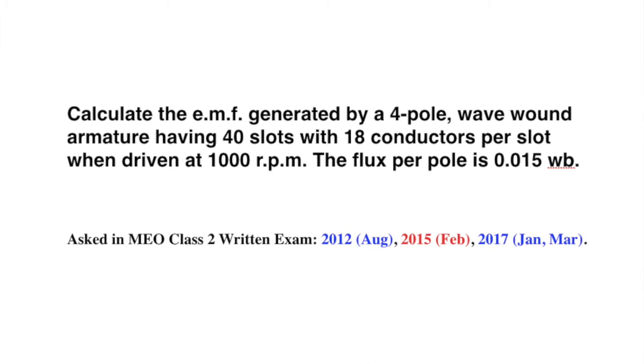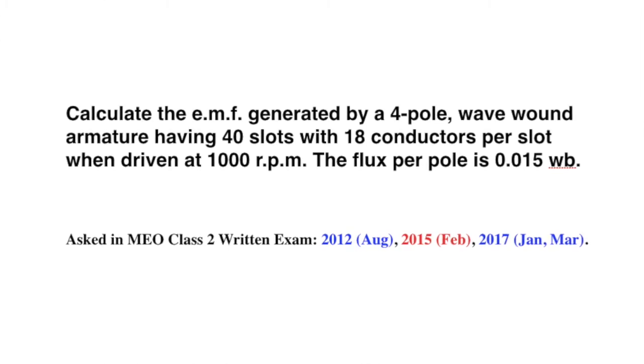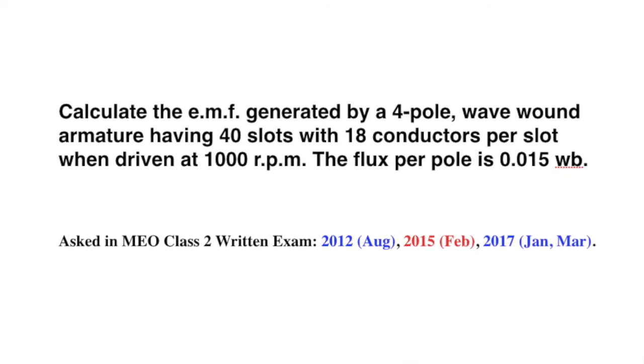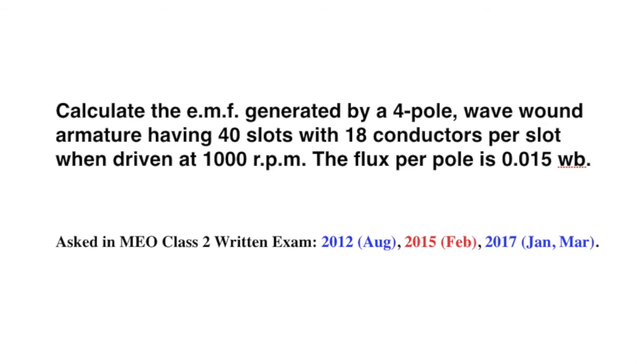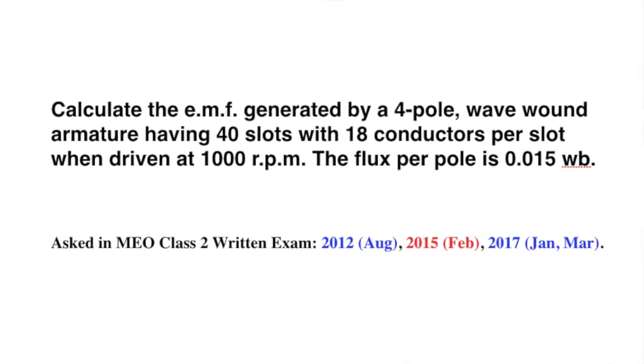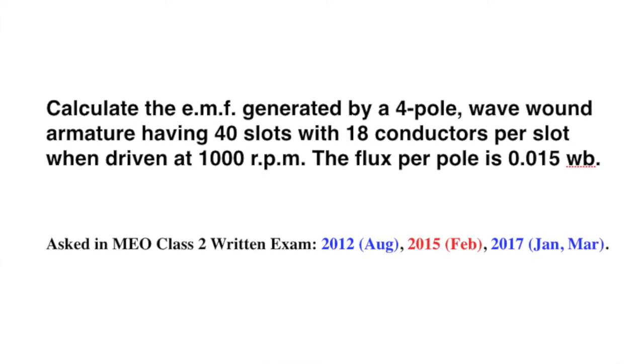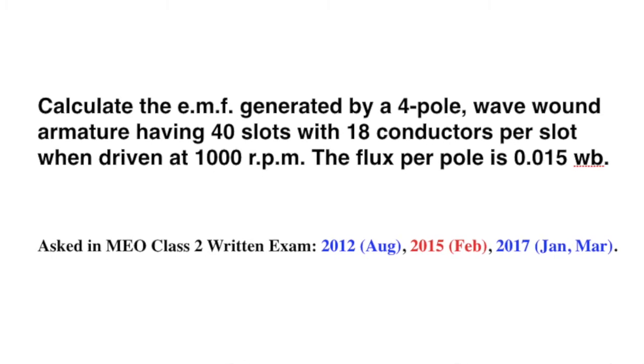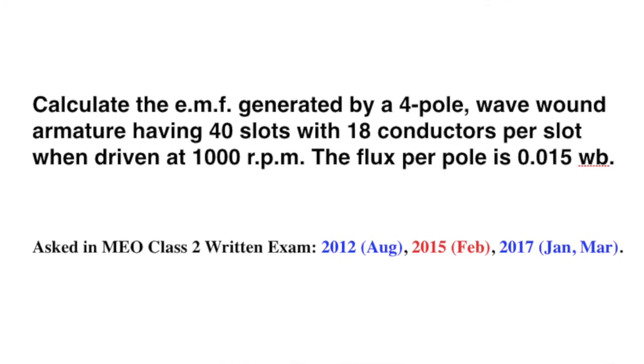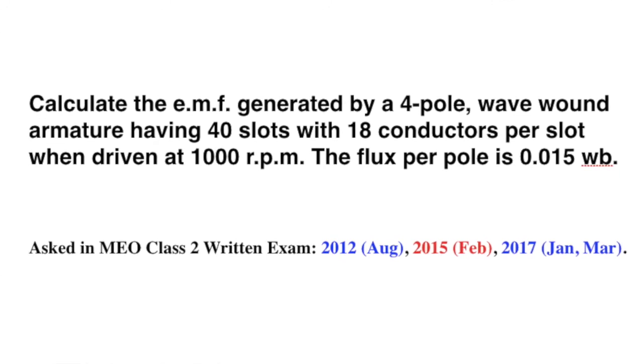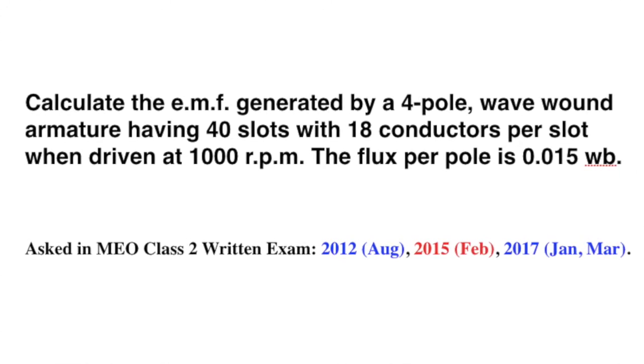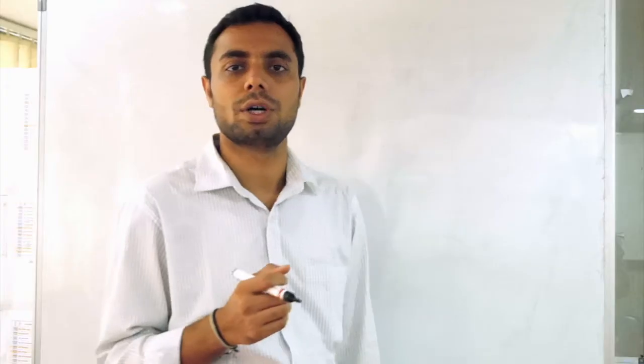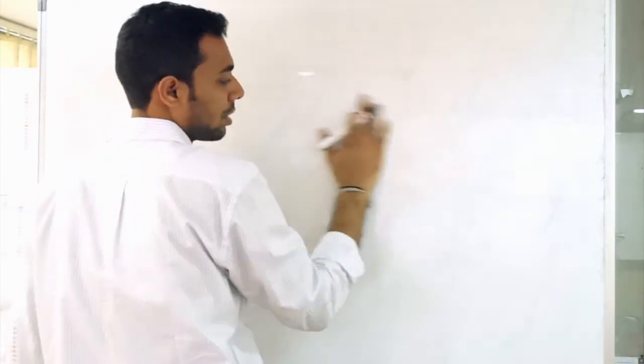Let's see what the question is. The question asks you to calculate EMF generated in a 4 pole wave wound DC motor having 40 slots with 18 conductors per slot. When this motor is driven at 1000 rpm what is the EMF generated. Another piece of information that is given is the flux per pole is 0.015 Weber. Let's put all the information that is given here.